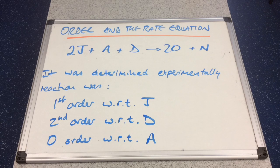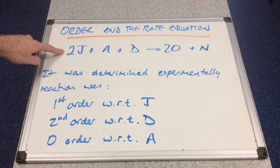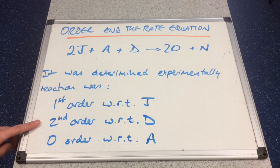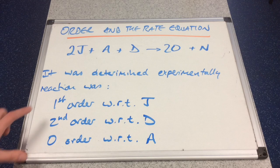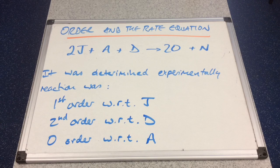It was determined experimentally that the reaction was first order with respect to J, second order with respect to D, and zero order with respect to A. We're going to use this information to establish what's known as the rate equation for this reaction.